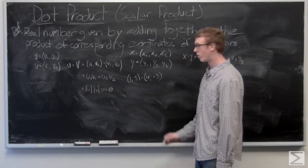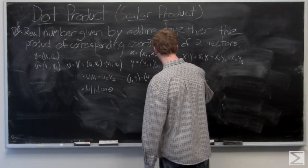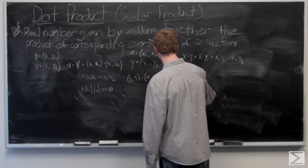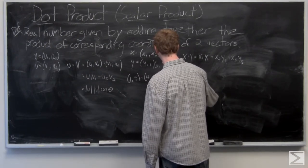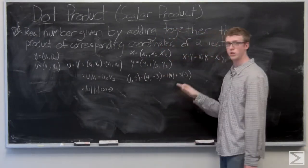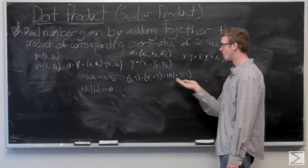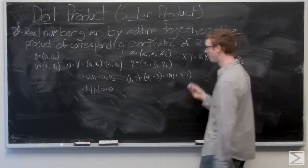We have one comma five dot four comma negative three. Which is one times four plus five times negative three, which is four plus negative fifteen, negative eleven.